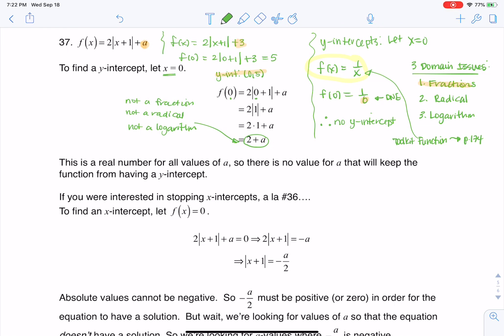So what that means is that I don't have any domain issues here. So that's why you see in my answer that there is no value of a that will keep this function from having a y-intercept. So regardless of what you make this a value you will have a y-intercept at (0, 2 plus a). So your y-intercept will always be the ordered pair (0, 2 plus a).